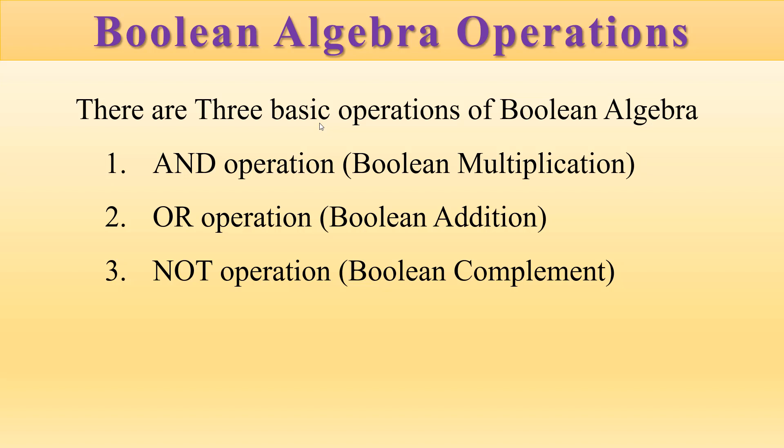These three terms, multiplication and addition, we have already used in our decimal algebra, but here they have a different meaning. We should not confuse multiplication with decimal multiplication or addition with decimal addition. These are Boolean operations, and AND, OR, and NOT are Boolean operators. Let us understand them one by one.